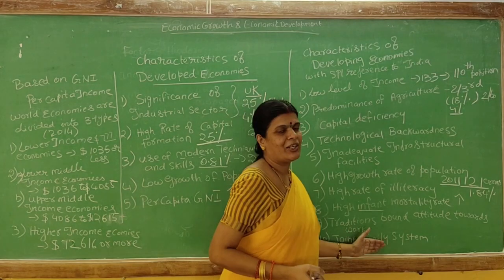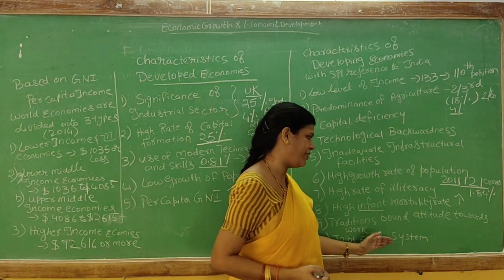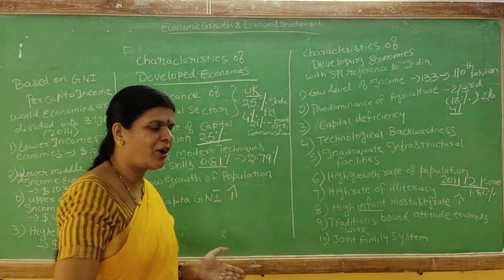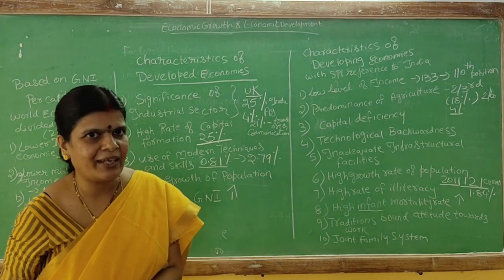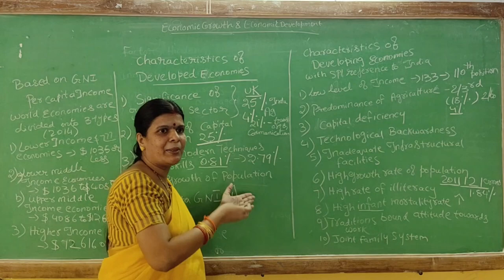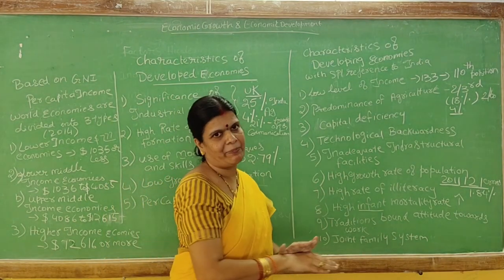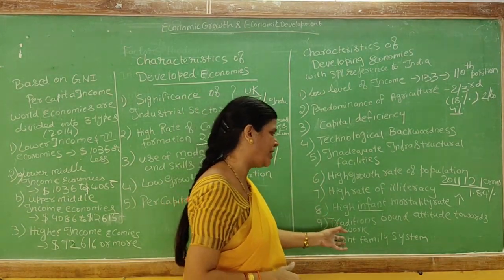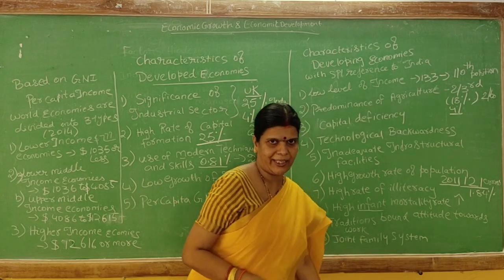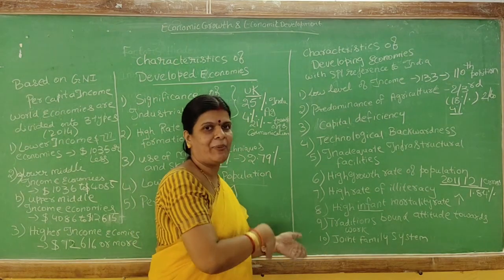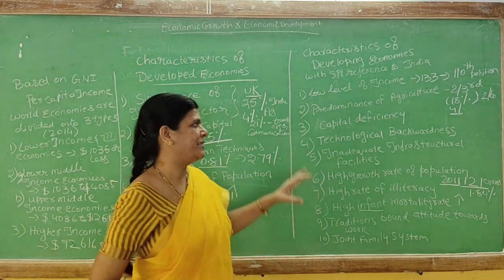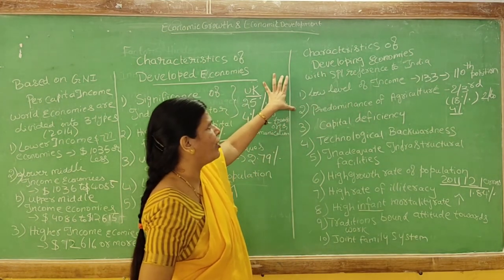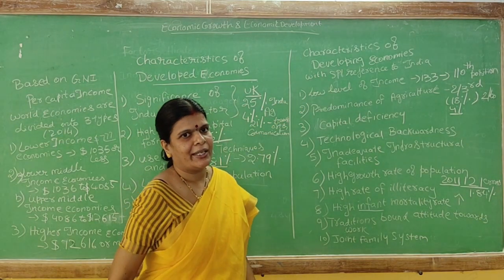The next characteristic is the joint family system. Until recently, India had more joint family systems; now we are slowly adopting nuclear families. The joint family system is not always advantageous — so many people live together, they don't want to go to another place for work, all members depend on the head of the family for income, and they are not ready to shift from one place to another. These are the main characteristics of a developing economy with special reference to India.